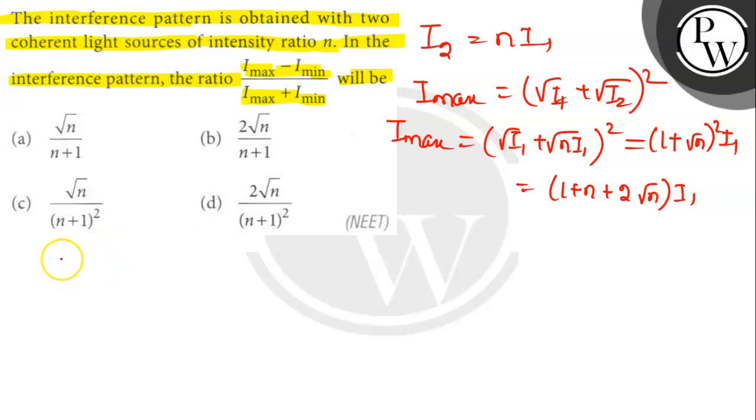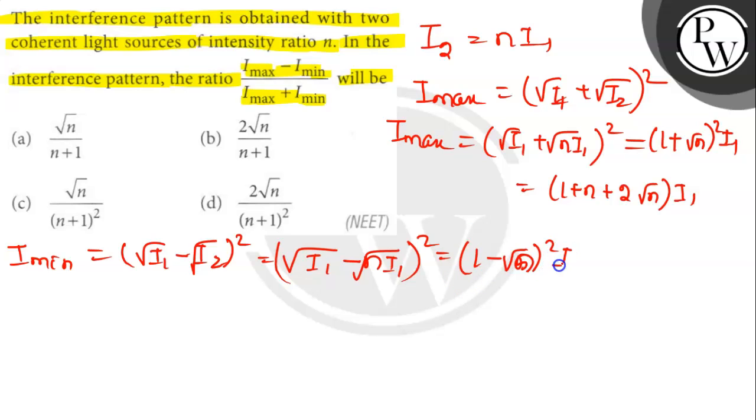So minimum intensity of interference I_min equals (√I₁ - √I₂)². So it will be (√I₁ - √(nI₁))², which equals (1 - √n)²I₁.